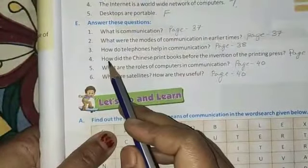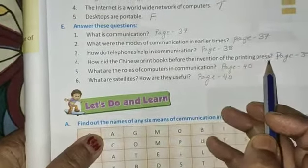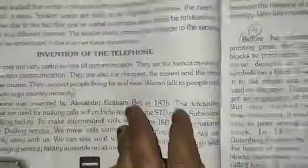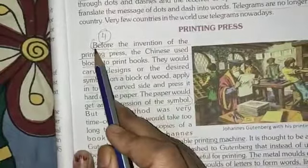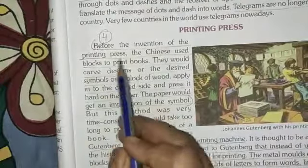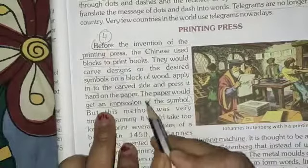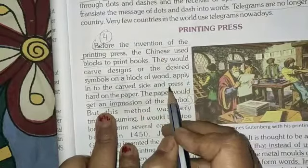Then question number 4, how did the Chinese print books before the invention of the printing press? This is on page number 39. Here, printing press. From before the invention of the printing press, the Chinese used here to impression of the symbol. Up to here, number 4 answer.